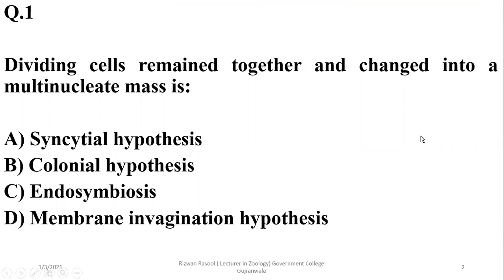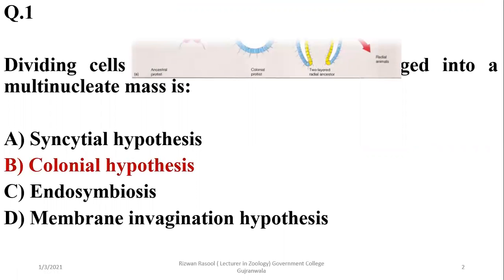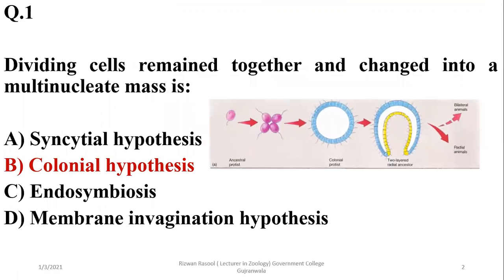It's about dividing cells that remain together and change into a multi-nucleate mass. This is a description of hypotheses describing multicellularity. Colonial hypothesis states that when cells remain together in colonial form and this mass later develops into a two-layered ancestor or multicellular organism.